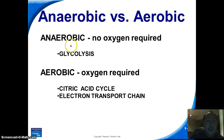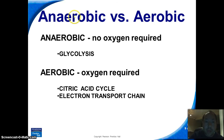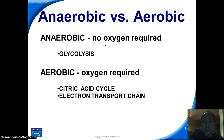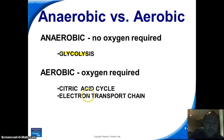Anaerobic means without oxygen; aerobic means with oxygen. The only process out of the three that can happen without oxygen — with or without oxygen present — is glycolysis. The other two, the citric acid (Krebs) cycle and the electron transport chain, require oxygen to occur.